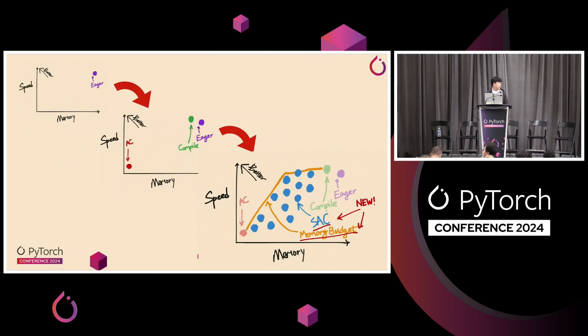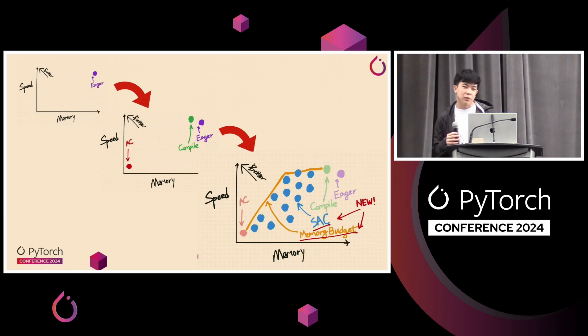As you may have heard from other presentations, activation memory is a big reason why your model might OOM. And activation checkpointing is a way to reduce activation memory. In this presentation, we'll start off by first looking at a couple activation checkpointing APIs that exist today, and then we'll look at some new APIs that aim to improve the flexibility and automation of these checkpointing APIs.